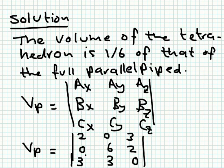What remains is a straightforward calculation to get the volume of the parallelepiped. The volume of the parallelepiped is the triple scalar product, obtained by the determinant here. Every vector will be in a row: A in the first row, B in the second row, C in the third row. We expand this determinant, and once we get this number, we take one-sixth of it to get the volume of the tetrahedron.